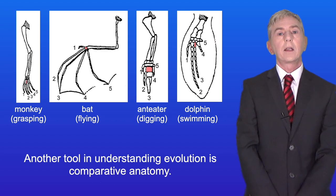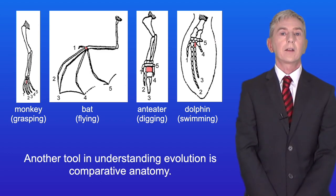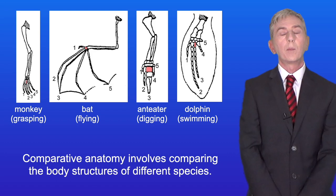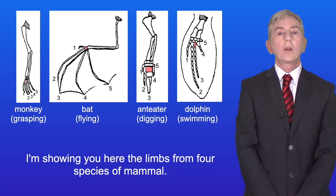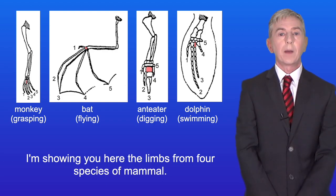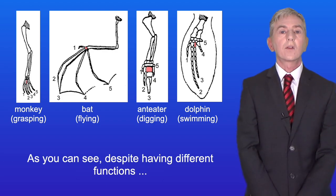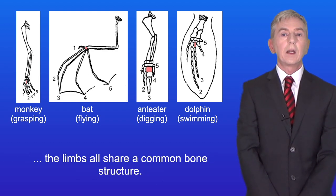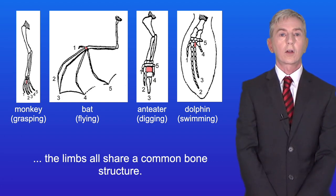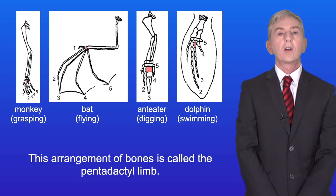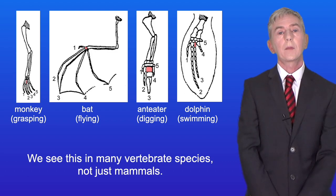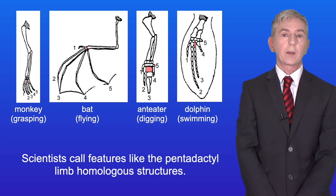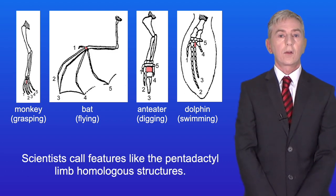Another tool in understanding evolution is comparative anatomy. Comparative anatomy involves comparing the body structures of different species. I'm showing you here the limbs from four species of mammal. Despite having different functions, the limbs all share a common bone structure. This arrangement of bones is called the pentadactyl limb and we see this in many vertebrate species, not just mammals. Scientists call features like the pentadactyl limb homologous structures.